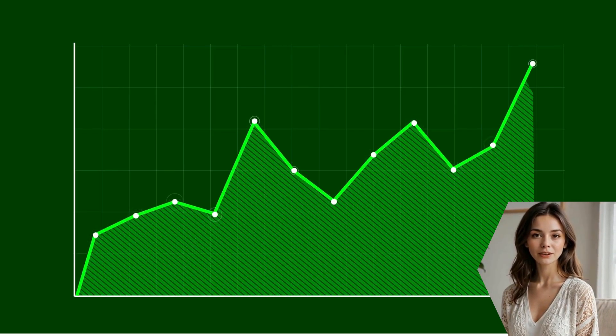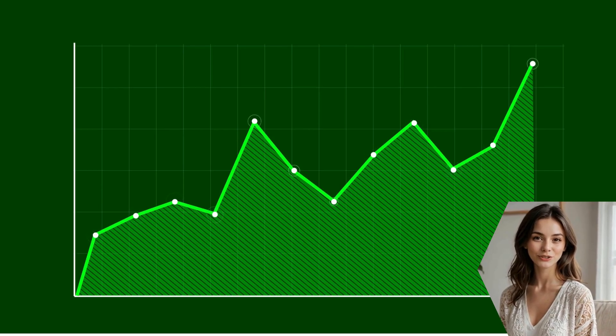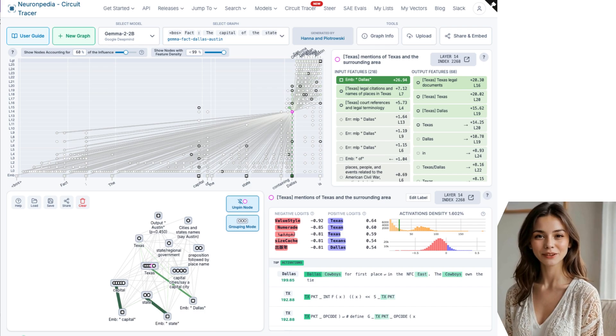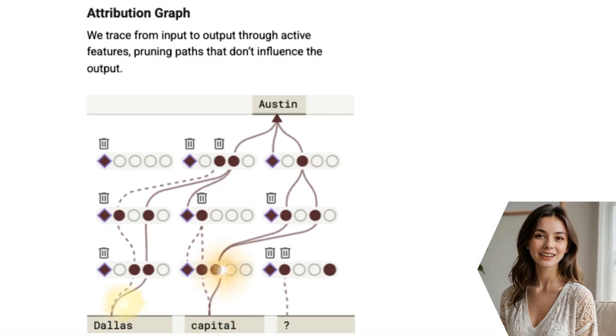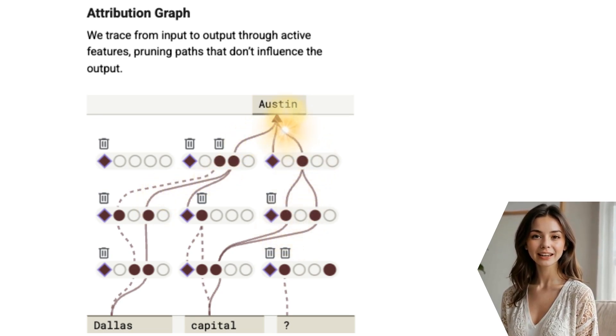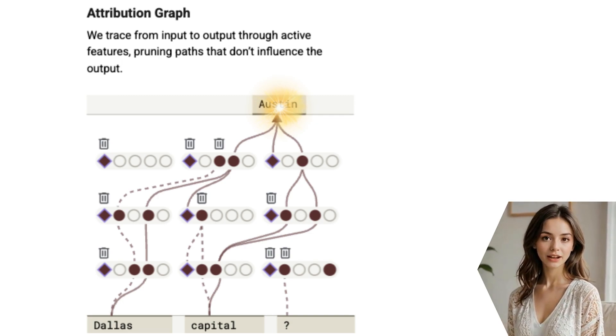Once they have this replacement model, they can create attribution graphs, using the tool they built, called Circuit Tracer. For a specific prompt, like the capital of the state containing Dallas is, the graph traces which features cause other features to activate, step-by-step, from the input all the way to the final output. It's a map of the model's reasoning process for that one specific task.